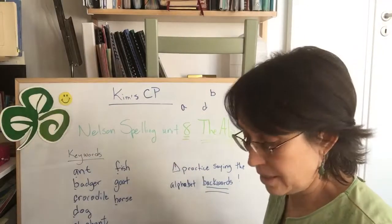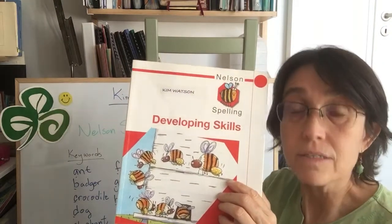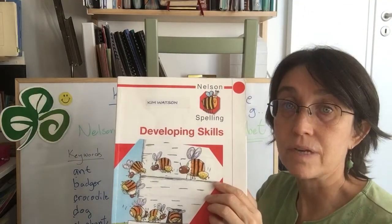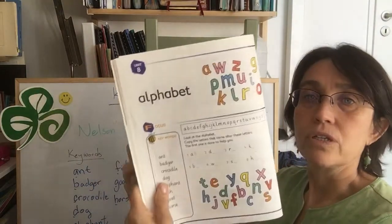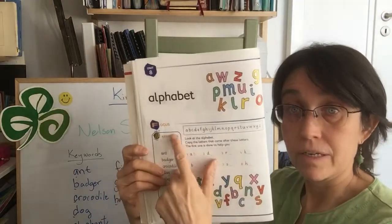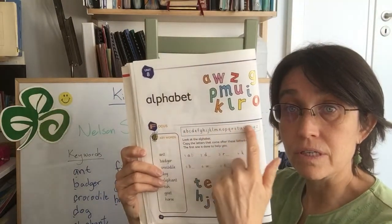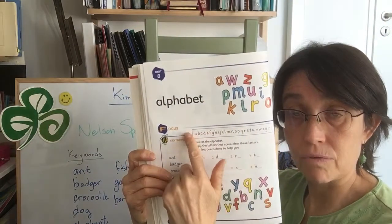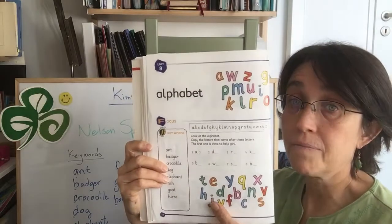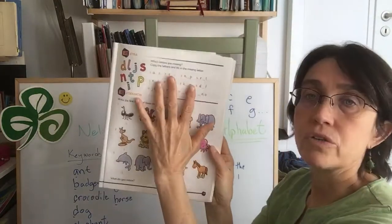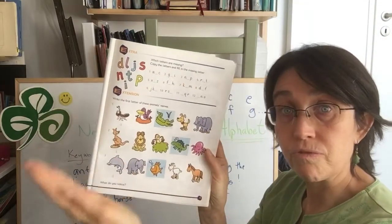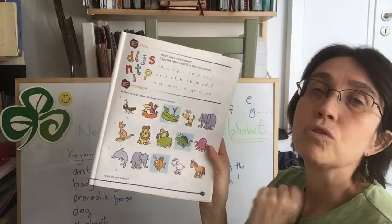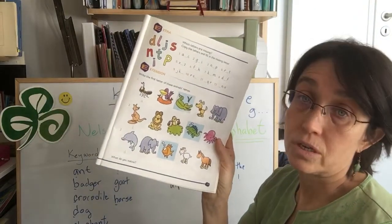Now in this we are working on spelling development. Spelling means you need to know your letters and the alphabet. You're working on unit eight, the alphabet, and it's very important. You can say the alphabet in order and backwards, forwards, backwards. Please practice. This whole unit is about understanding what letter is before, what letter is after, and that helps you to know how to use a dictionary later.